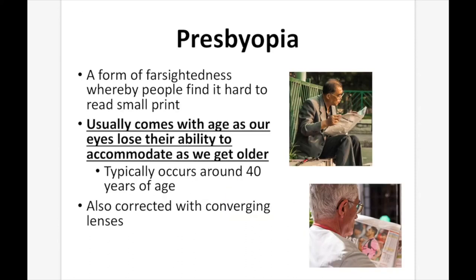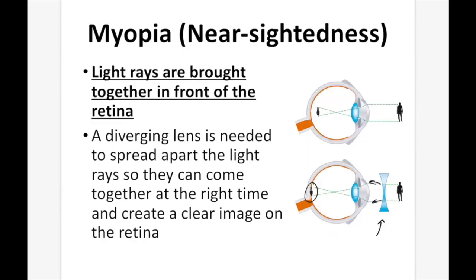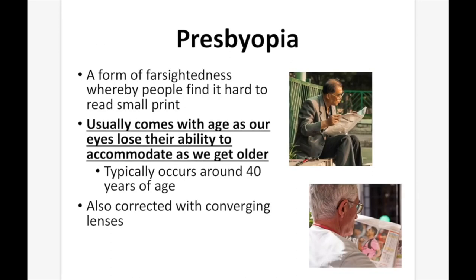People can have both farsightedness and nearsightedness, especially as they get older. If when younger they couldn't see far away, they require a diverging lens. But as they age, they may also develop presbyopia and need something to see up close as well. The result is bifocals — glasses where the top part is a diverging lens and the lower part is a converging lens so you can see things close up.